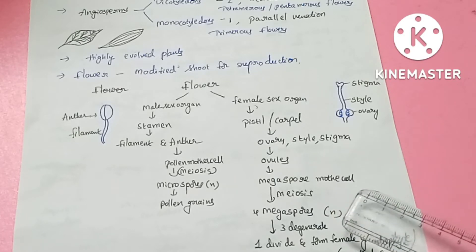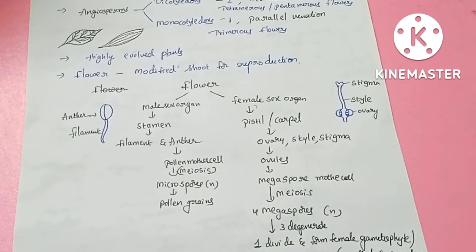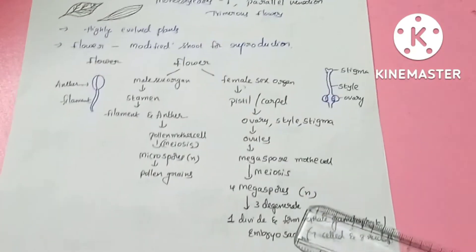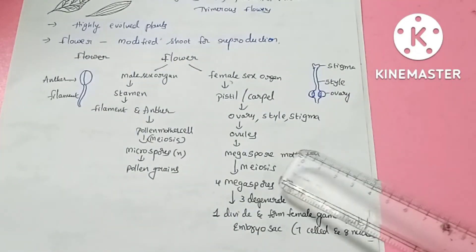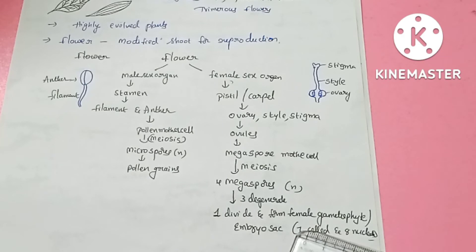After meiosis, 4 megaspores are produced; 3 of these degenerate and only 1 is the functional megaspore. The functional megaspore then divides by mitosis to form the female gametophyte.